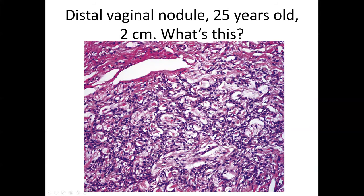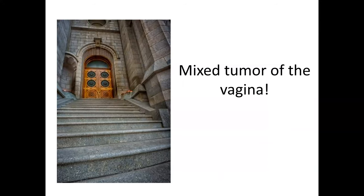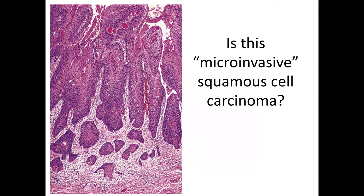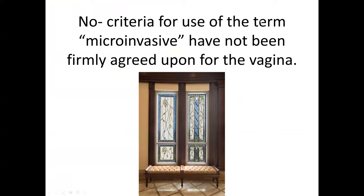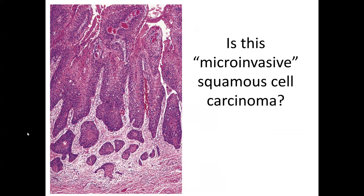A 2-centimeter lesion in the distal vagina of a 25-year-old with mixed epithelial and myoepithelial features should prompt a diagnosis of mixed tumor of the vagina. The term 'microinvasive squamous cell carcinoma' should not be used for the vagina, as there are no established criteria for it; preferred terms include 'early stromal invasion' or 'minimally invasive squamous cell carcinoma.'